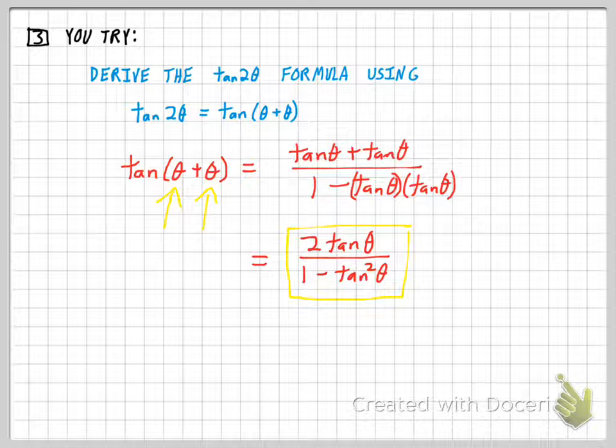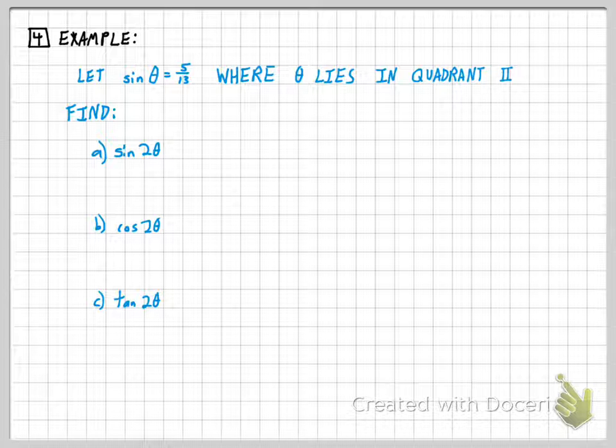So if you did have to memorize these formulas, this might be a useful trick in deriving pretty quickly any of the double angle formulas. Here's an example, a typical example you might see where you're given a trig value and asked to find other trig values of not the angle given, but maybe twice the angle given.